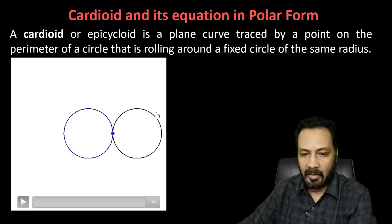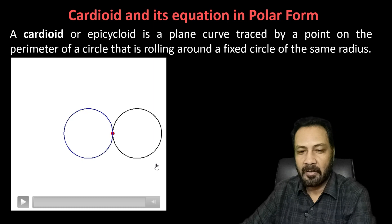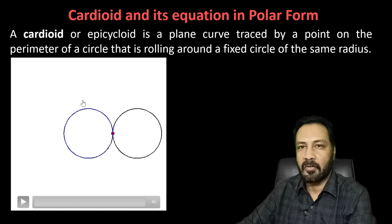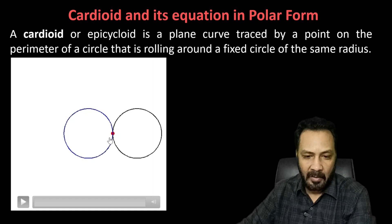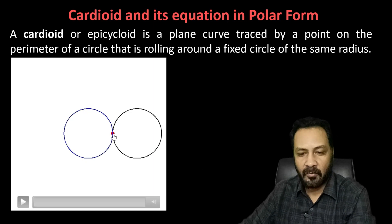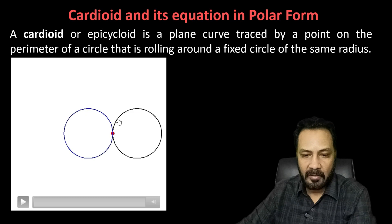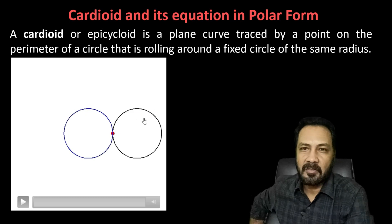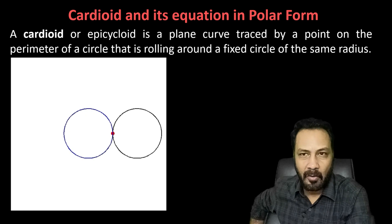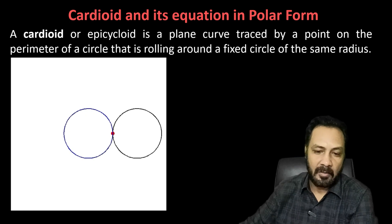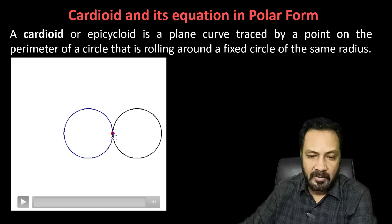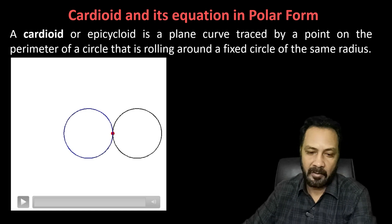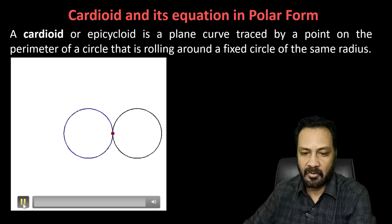To make it more clear, let's see an animation. This is a fixed circle and there is another circle in the same plane of the same radius. This circle is going to roll without slipping on the fixed circle. The red point is the point of contact of the rolling circle with the fixed circle. The trajectory of this initial point of contact as the rolling circle rolls is what the cardioid is.